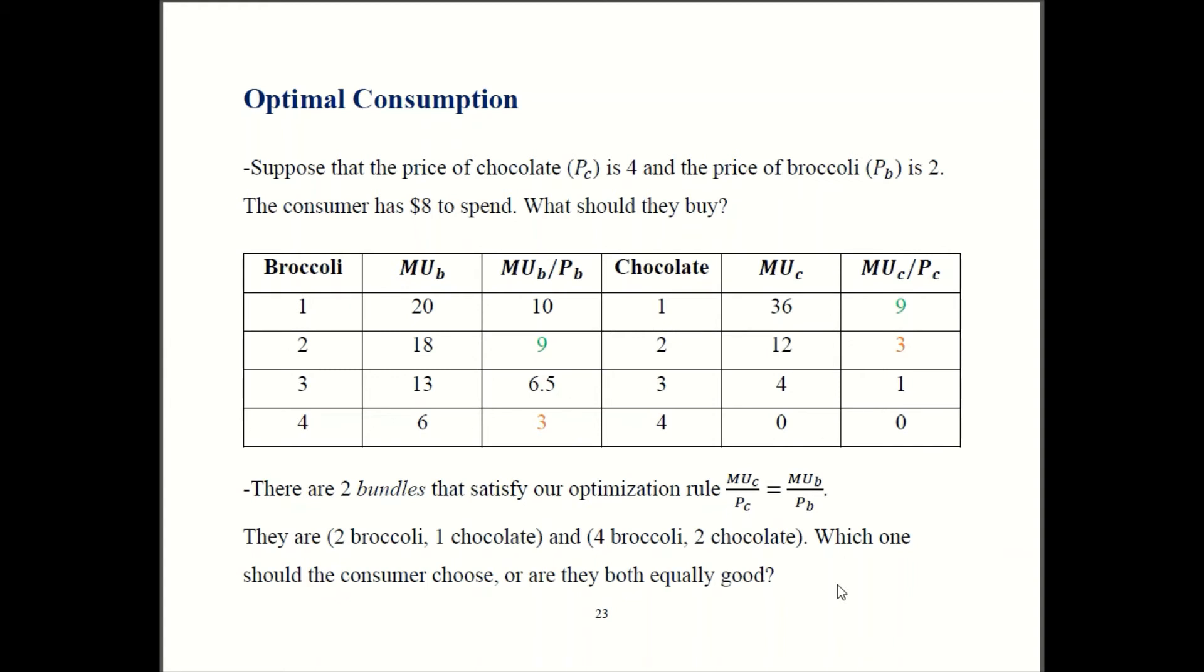All right, back to my question. So we have these two bundles that appear to satisfy the rule. So what should a consumer do? Should they buy the first one here, two broccoli, one chocolate? Should they buy four broccoli, two chocolate? Or does it just not matter? Are they both equally desirable? So if you haven't worked that out already, go ahead and pause the video here and think about that before you press play and we see the answer.